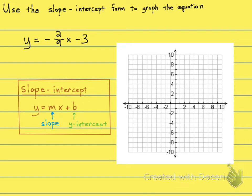They want us to use that. So the two things we're going to identify are the slope and the y-intercept. You can see here the slope is the coefficient in front of x. So the slope is negative 2 over 9.